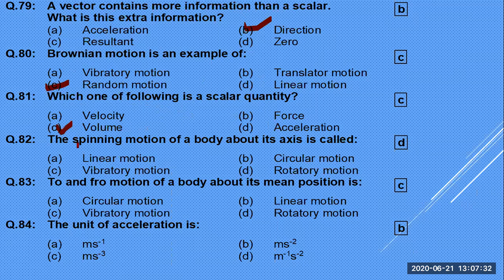Which is a scalar quantity: velocity, volume, or force? Velocity is a vector, force is a vector, so volume is the only scalar quantity here. The spinning motion of a body about an axis is called rotatory motion — not linear, not circular.